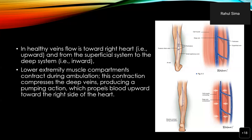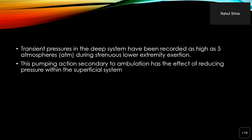In healthy veins, flow is towards the right side of the heart and from the superficial to the deep system. The muscle compartments contract during ambulation upward and forward. Transient pressures in the deep venous system may be recorded as high as five atmospheres during strenuous activity. This pumping action, secondary to ambulation, has the effect of reducing superficial system pressure.